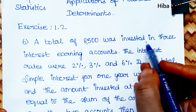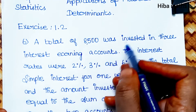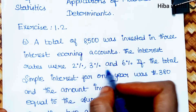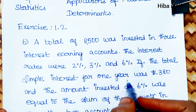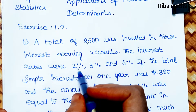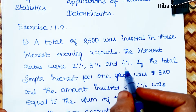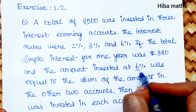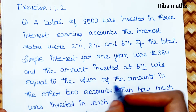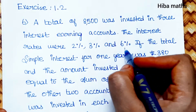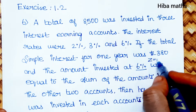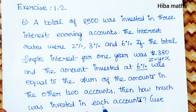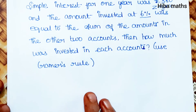A total of 8500 was invested in 3 interest-earning accounts. The interest rates were 2%, 3%, and 6%. If the total simple interest for 1 year was 380, and the amount invested at 6% was equal to the sum of the amounts in the other two accounts — that is, z equals x plus y — find how much was invested in each account using Cramer's rule.